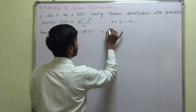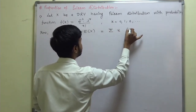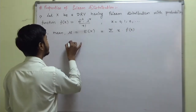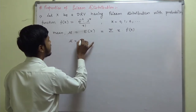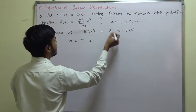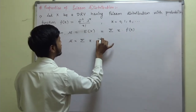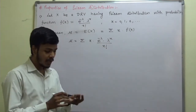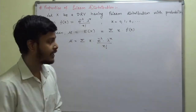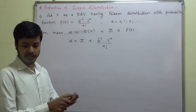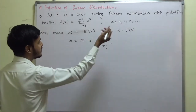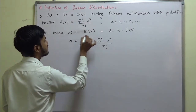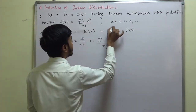What is the expectation of x in this Poisson distribution for a discrete random variable? This is nothing but the summation of x · f(x). So μ equals the summation of x · e^(−λ) · λ^x / x!, with x varying from 0 to infinity.